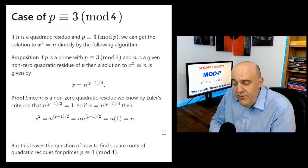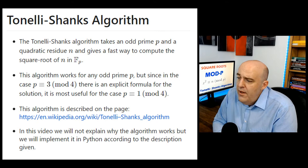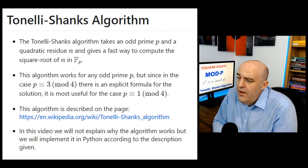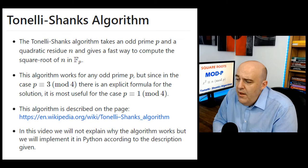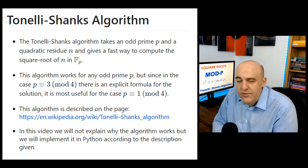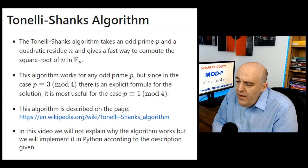The question remains: when p is congruent to 1 mod 4, how do we find the square root? There is an algorithm — Tonelli-Shanks — that we can use here. It's a fast way to compute the square root of n. It works no matter what: even if the prime is congruent to 1 or 3 mod 4, any odd prime works. The algorithm is described on the Wikipedia page, and in this video we're going to implement it in Python just by following the wiki article.